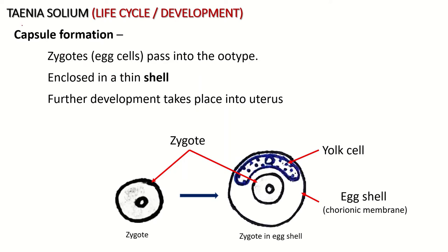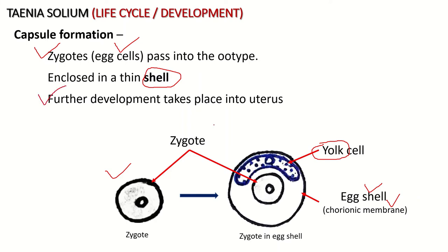After fertilization, a zygote is formed, also called the egg cell. Around the zygote, capsule formation takes place — the zygote is enclosed in a shell made using yolk material. This shell is also called the chorionic membrane, which forms around the zygote. Further development takes place in the uterus.